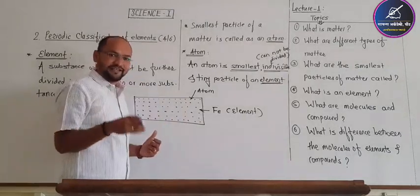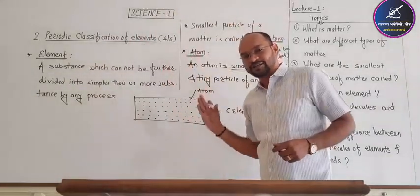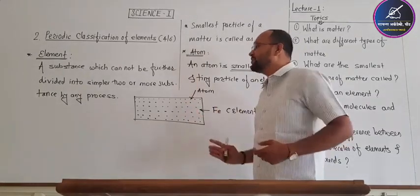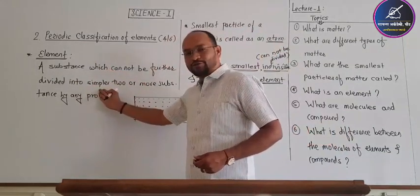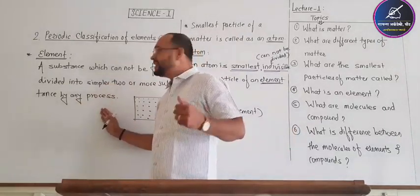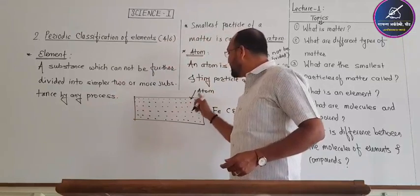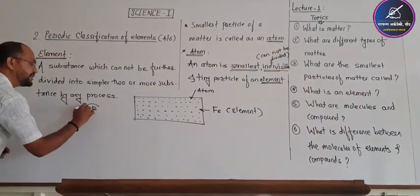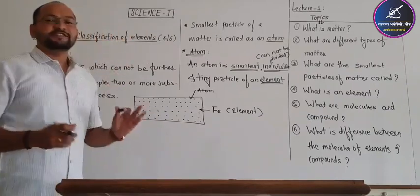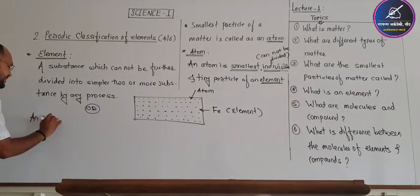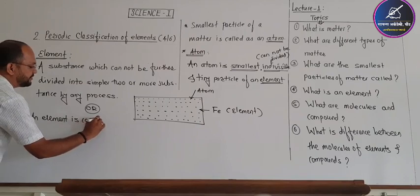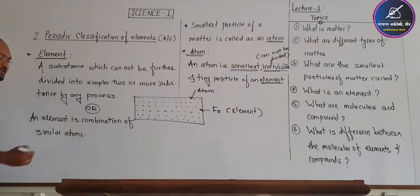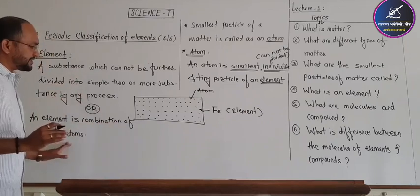We can divide elements, but we cannot divide them into two or more different substances by any process. When the smallest particle is an atom, you will find it in the element. The element is the combination of the same singular kind of atom.